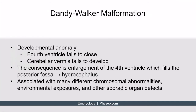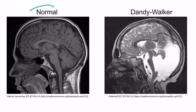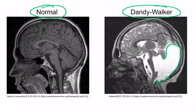Dandy-Walker malformation is also a developmental anomaly defined by two parts: the fourth ventricle fails to close, and the cerebellar vermis fails to develop. The net result is enlargement of the fourth ventricle, which fills the posterior fossa, giving the patient hydrocephalus. On the right image you can see Dandy-Walker malformation — the fourth ventricle failed to close, so CSF fills the posterior fossa.